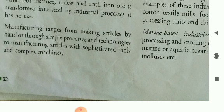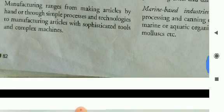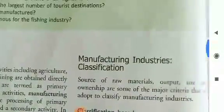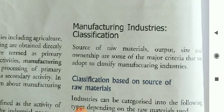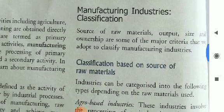Manufacturing ranges from making articles by hand through simple processes and technologies, to manufacturing industries with sophisticated tools and complex machines. Classification dictates: source of raw materials, output, size, and ownership are some of the major criteria adopted to classify manufacturing industries.